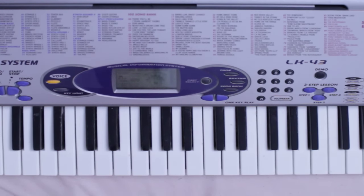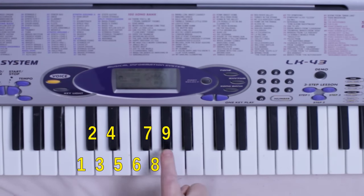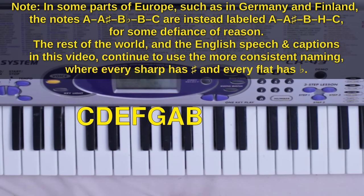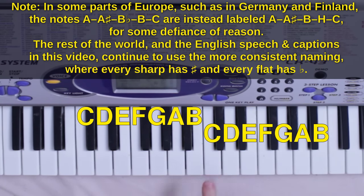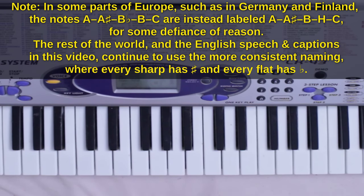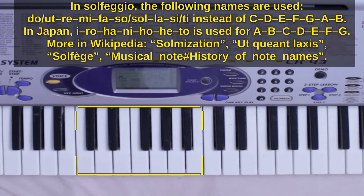On a piano keyboard you will find twelve different notes. Twelve notes in total. After B comes a new set of twelve notes. This and this are the same note, but higher. So are this and this, and so on. This set of twelve notes is called an octave.